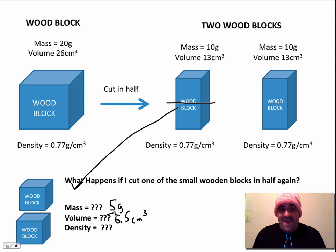If you remember, density is mass divided by volume. It's the formula for density. D equals M over V. 5 grams divided by 6.5. When you put that in your calculator, if you don't believe me, please put it in.